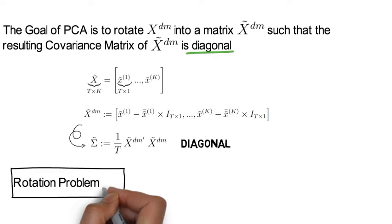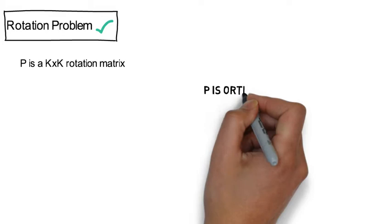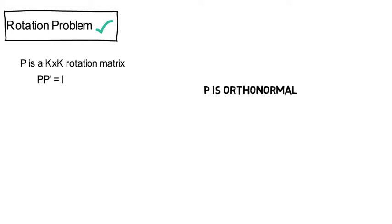Now let's look at the solution of that rotation problem. I define P to be a K times K rotation matrix. A rotation matrix can be any orthonormal matrix. That means that P P transpose needs to be the identity matrix.